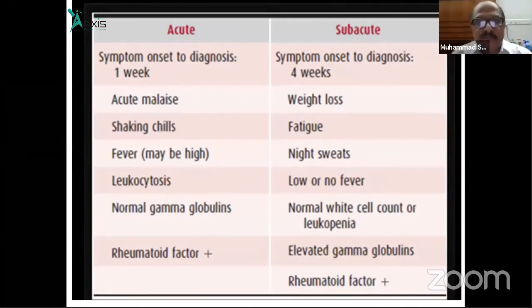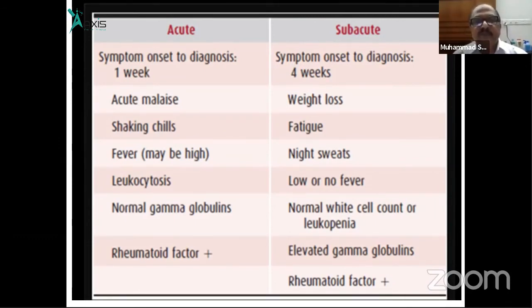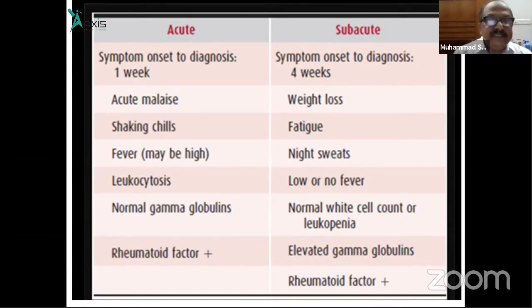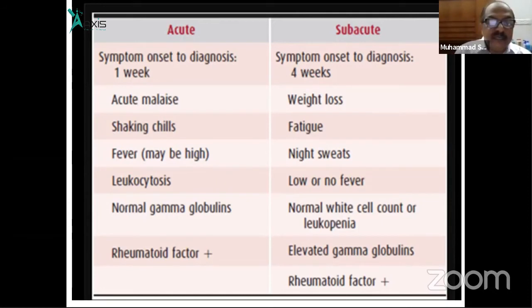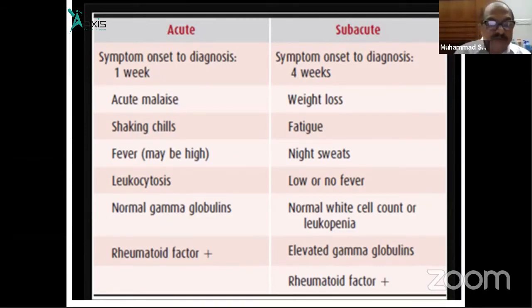In subacute infective endocarditis, there is chronic illness with malaise, fever, weight loss, fatigue, and night sweats. Investigations show leukocytosis, elevated ESR, elevated CRP, elevated gamma globulin, and a positive rheumatoid factor.